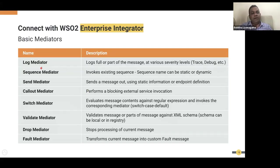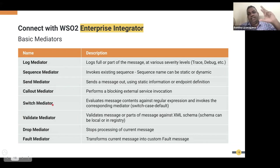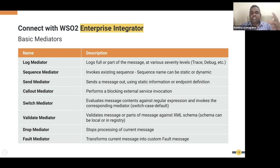WSO2 has around 50 to 60 mediators. For example, the Send or Call mediator lets you call a different API and get a response. The Switch mediator is like a programming switch-case, but instead of writing Java source code you configure it in a UI graphically and play with the message — evaluating message content or body and routing to different systems. You don't need to write code at all; you can configure it in a drag-and-drop manner.